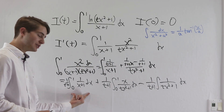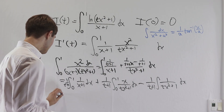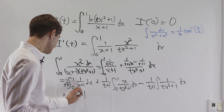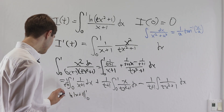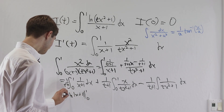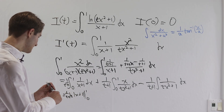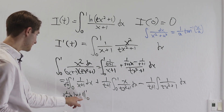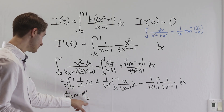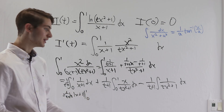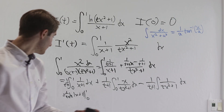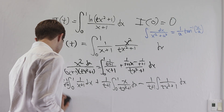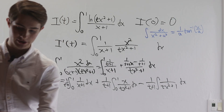The first integral is nice and easy. We get the natural log of x plus 1 evaluated at 1 and 0. That's the natural log of 2 minus the natural log of 1, and since the natural log of 1 is 0, this is just 1 over t plus 1 times the natural log of 2.